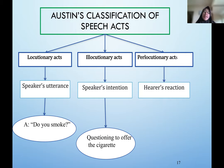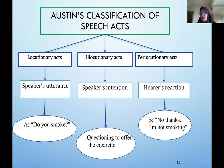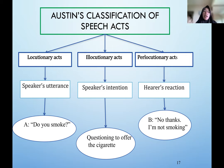The third category is the perlocutionary act, which is the effect or reaction of the hearer. After listening to the utterance — the locutionary act — what is the hearer's reaction? They can accept the offer or refuse it. For example, the reaction might be 'No thanks, I'm not smoking,' meaning the hearer is rejecting the offer. So in any speech, whether direct or indirect, there are three main categories: locutionary act, illocutionary act, and perlocutionary act.